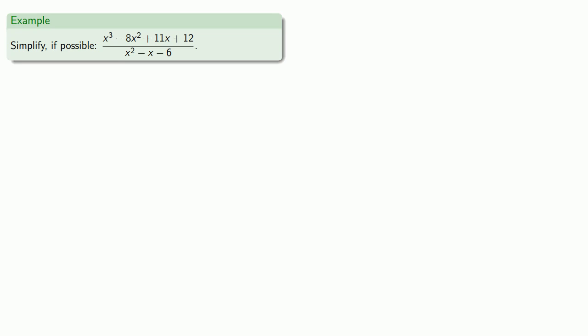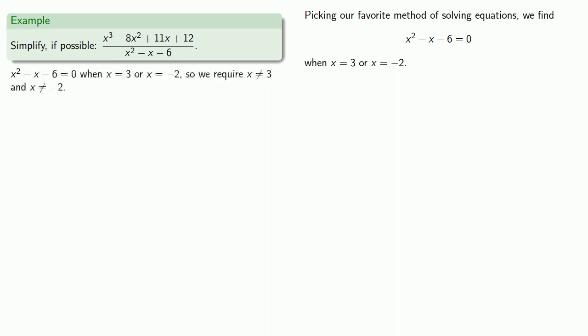Nothing really changes if our expressions grow more complicated. Picking our favorite method of solving equations, we find that x squared minus x minus 6 equals 0 when x equals 3 or negative 2. So we require x not be equal to 3 and x not be equal to negative 2. So let's factor. Since we know the roots of the denominator, we can factor it immediately.